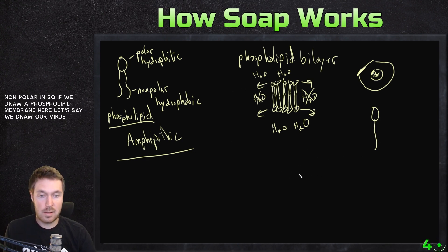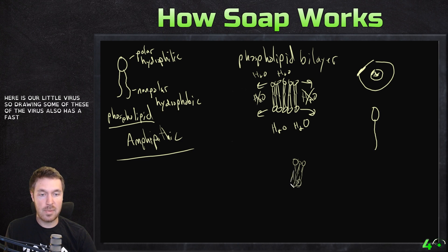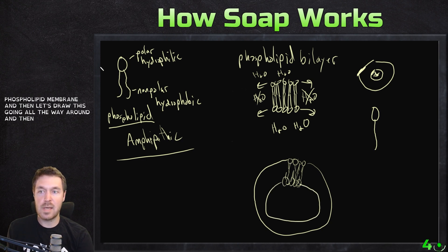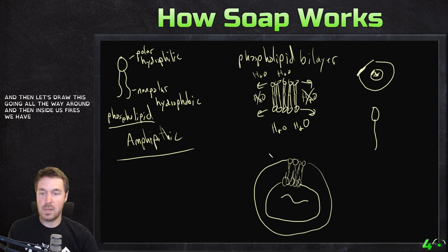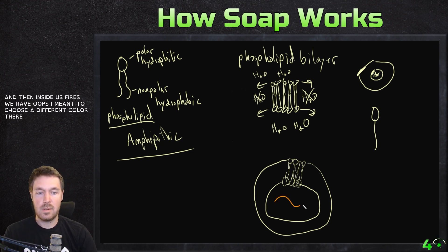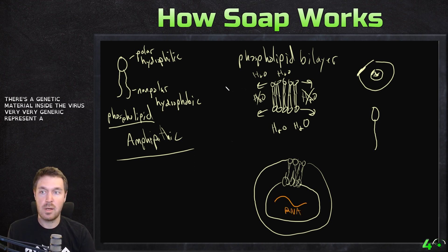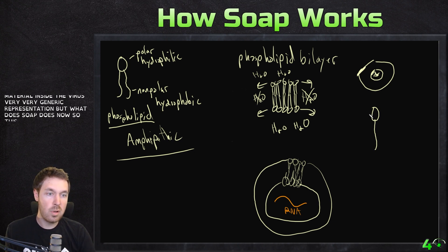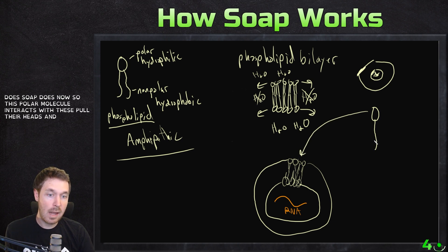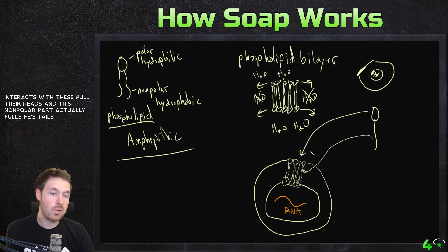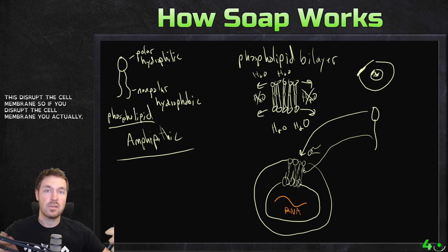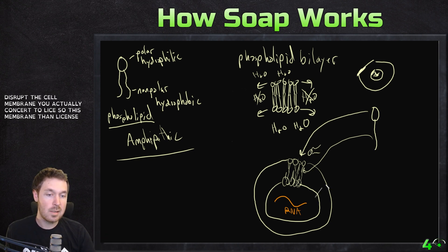So if we draw a phospholipid membrane — let's say we draw our virus — here is our little virus. The virus also has a phospholipid membrane, drawing this going all the way around. And then inside this virus we have the RNA — the genetic material inside the virus. What this soap does now: the polar molecule interacts with these polar heads, and this nonpolar part actually pulls these tails out. So this disrupts the cell membrane. If you disrupt a cell membrane, you actually cause it to lyse. So this membrane then lyses and breaks apart.